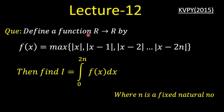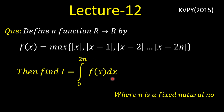Now the question is: we have to define a function which is from R to R. The function is given in the form of maximum of the following functions: mod of x, mod of x minus 1, similarly till mod of x minus 2n, where n is a fixed natural number. We have to find the integration of f of x from 0 to 2n with respect to x.